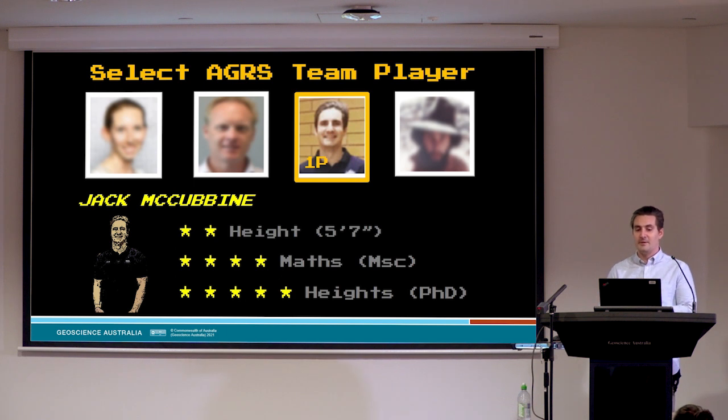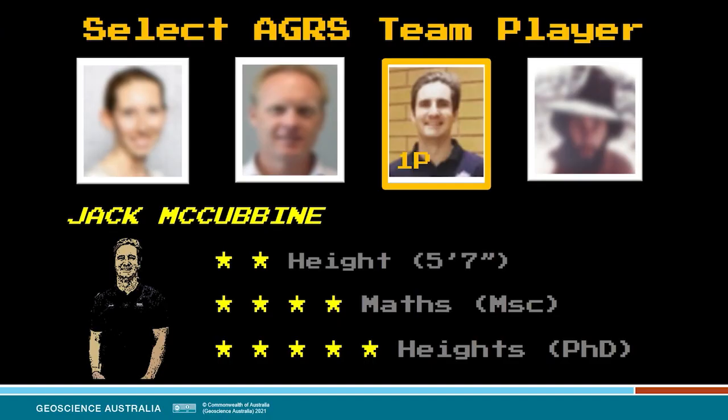My name's Jack McCubbin. I'm a geodetic scientist in the Australian Geospatial Reference Team in the National Geodesy Section. I'm originally from the UK and studied maths at the University of Exeter, and in 2013 I set off on an adventure to study for a PhD in geophysics at Victoria University of Wellington in New Zealand. My PhD project involved collecting a nationwide set of airborne gravity data and using it to compute a surface called the geoid, which is used to get meaningful heights from GPS data. Following this, I worked as a postdoc at Curtin University in WA, computing a new geoid model for Australia, and in 2017 I came to work at GA as a geodetic gravity officer.